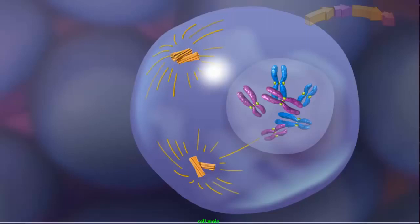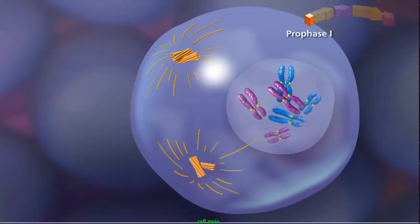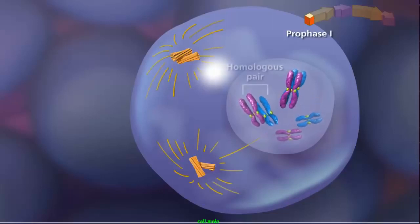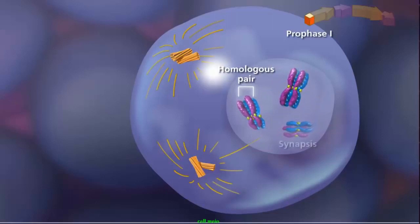The first event occurs during prophase I, when homologous pairs of sister chromatids lie side by side in a process called synapsis, forming a tetrad or bivalent. The homologous chromosomes share similar, but not necessarily identical, genes.